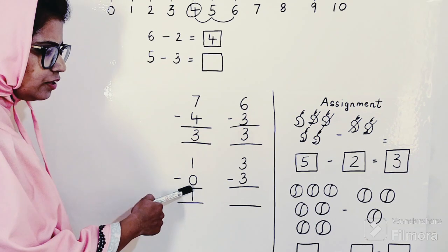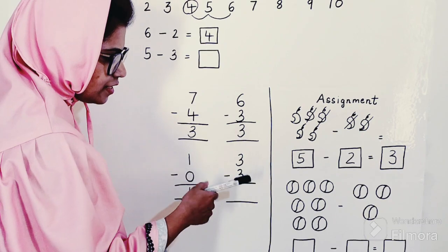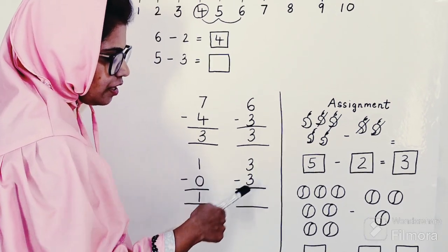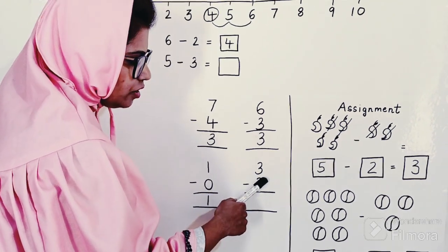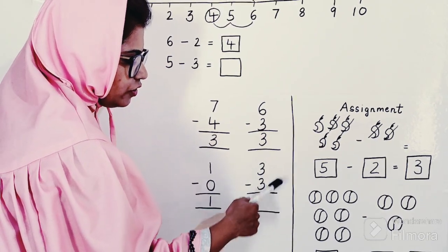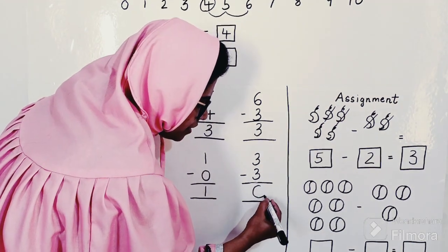Now moving towards the next example: 3 minus 3. How will you do it? Keep 3 in your mind; from 3 count after 3 up till 3. So 3 after 3 up till 3 is 0—nothing remains with me. So the answer over here is 0.